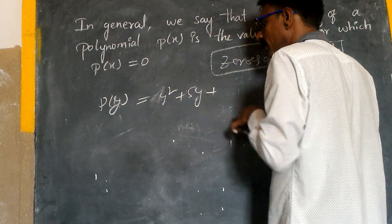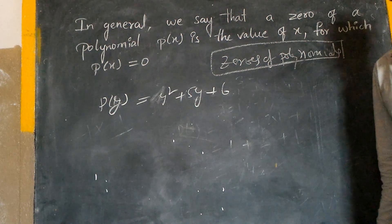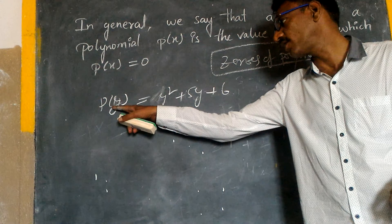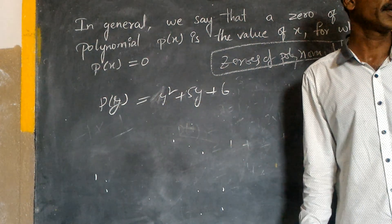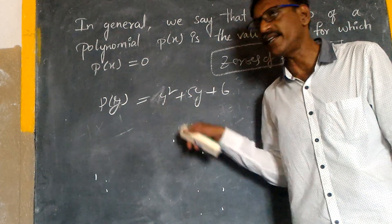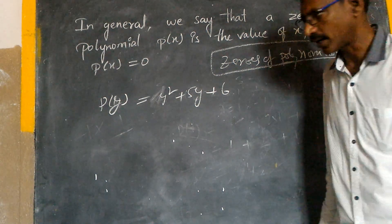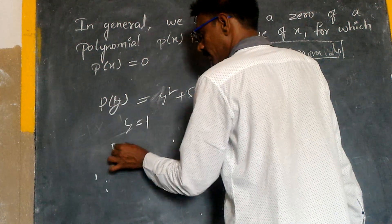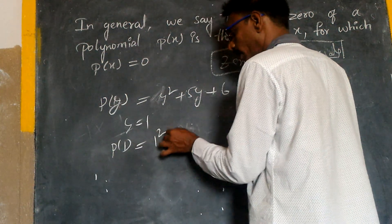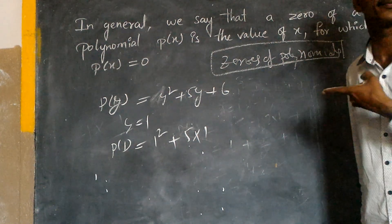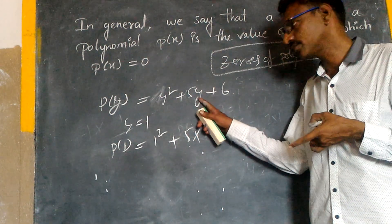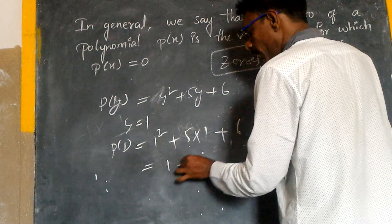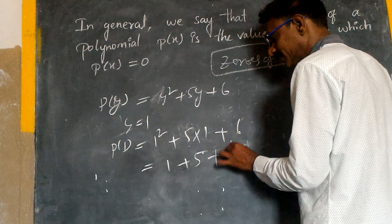So, y squared plus 5y plus 6 — I would like to take this. This is also a polynomial in y. So, what value of y will make it zero? I will try it. P of 1 is equal to 1 squared plus 5 into 1 plus 6. One plus five plus six equals twelve.